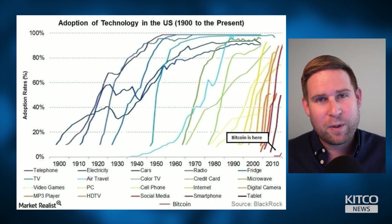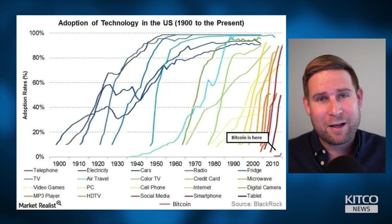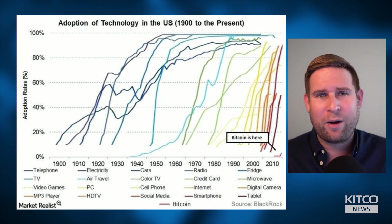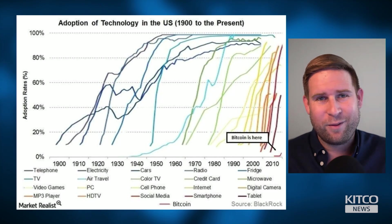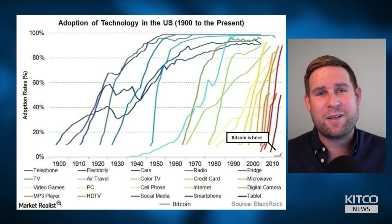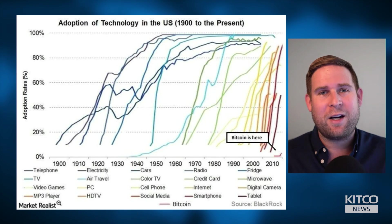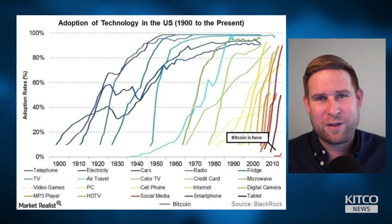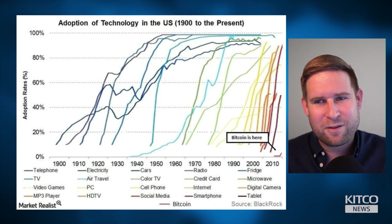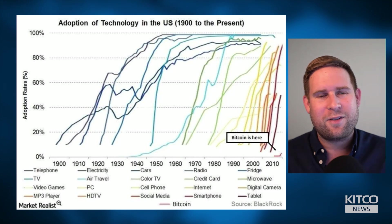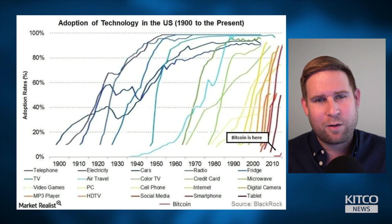With Bitcoin, we're at a very early stage. I think a lot of people, when they look at Bitcoin's price, think they've missed the boat. No — we're just getting started. If Bitcoin becomes widely adopted, its price won't be in the hundreds of thousands. It would be in the millions. We have a long ways to go, and that's what this chart distills very well.